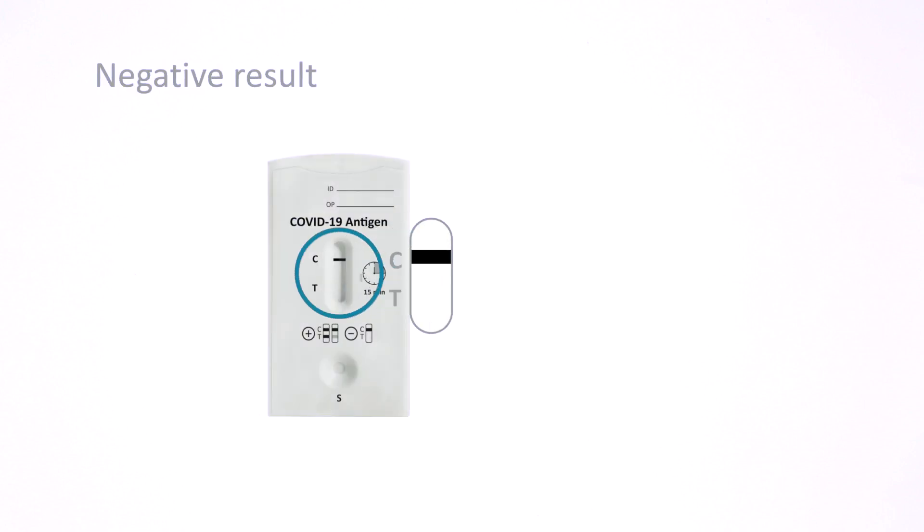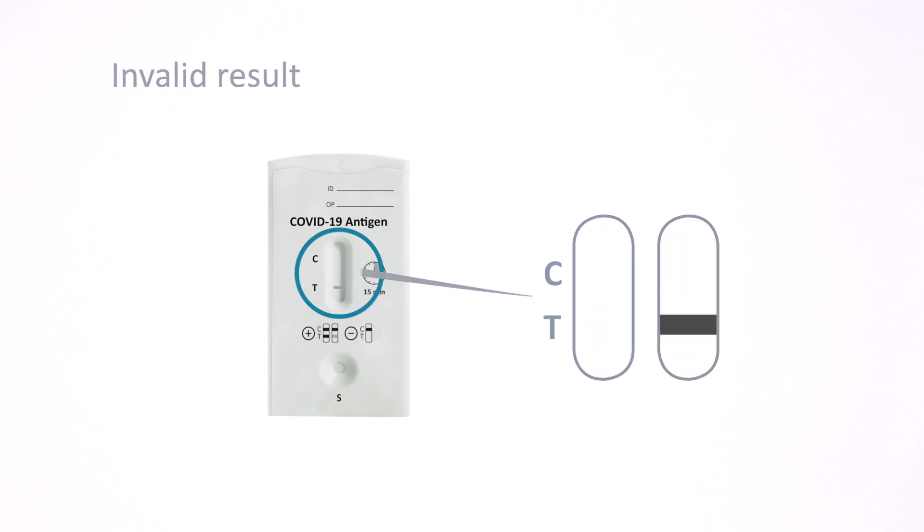If only the control line appears and not the test line, the result is negative. The control line indicates that the test has been performed correctly and should always be present.